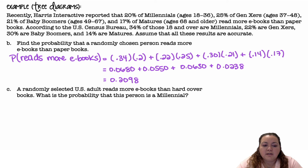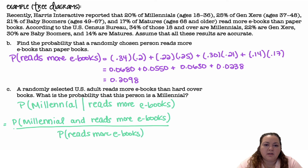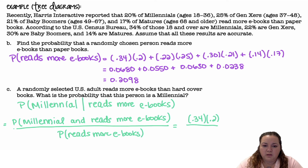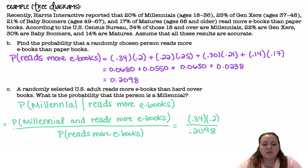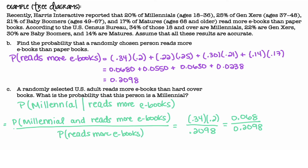Part C: a randomly selected U.S. adult reads more e-books than hardcover books. What is the probability that this person is a Millennial? This is the probability that they are Millennial given they read more e-books. For conditional probability, the numerator is Millennial and reads more e-books, divided by reads more e-books. So, 0.34 times 0.2 divided by 0.2098 — the total for reads more e-books calculated in Part B — gives 0.068 divided by 0.2098, which is about 32.4%, or 0.3241.